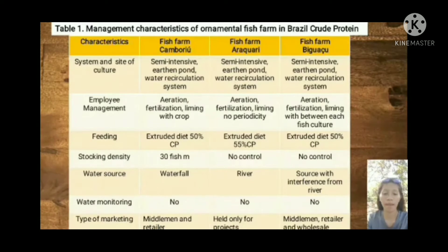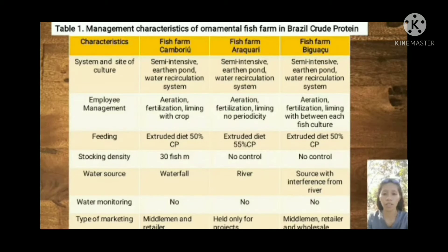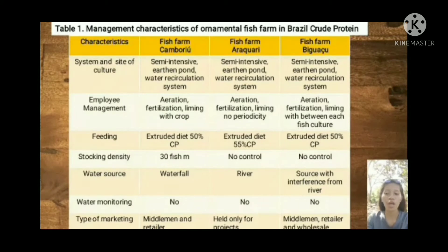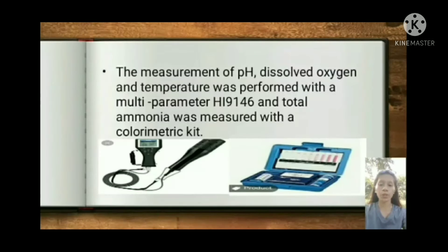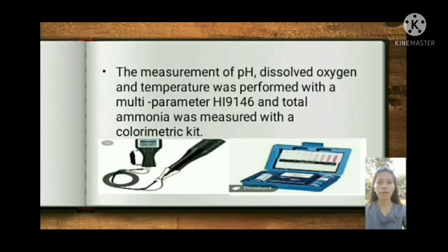Table 1 shows the management characteristics of the ornamental fish in the fish farms in Brazil, including crude protein content. The characteristics are classified by system and site of culture, employee management, feeding, stocking density, water source, water quality monitoring, and type of marketing. Water quality parameters were assessed at every fish sampling, with measurement of pH, dissolved oxygen, and temperature performed using a multi-parameter HI9146, and total ammonia measured with a colorimetric kit.